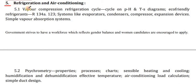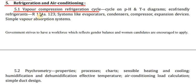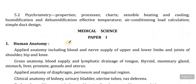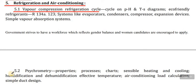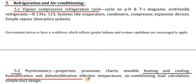In point 5 — Refrigeration and Air Conditioning. Under 5.1 — vapour compression refrigeration cycle on p-H and T-S diagrams, eco-friendly refrigerants R134A and R123, systems including evaporators, condensers, compressors, expansion devices, and simple vapour absorption system. Under 5.2 — psychrometric properties and processes, sensible heating and cooling, humidification, dehumidification, effective temperature, air conditioning load calculations, and simple duct design.